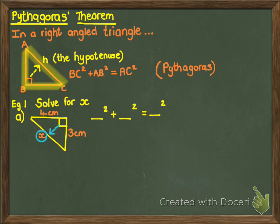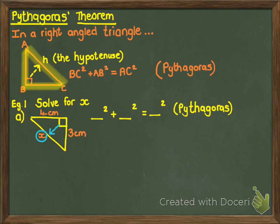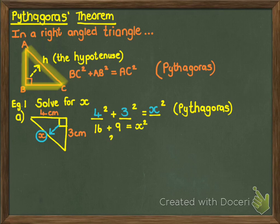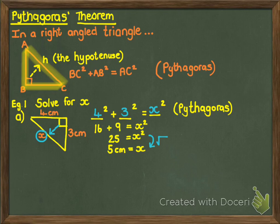I know Pythagoras' Theorem looks like: something squared plus something squared equals something squared — and I write in brackets: Pythagoras. I always put in my hypotenuse first, so the hypotenuse is always on its own. Something squared plus something squared equals the hypotenuse squared. Then I fill in my other two sides and solve the equation. So 4 squared is 16, 3 squared is 9, and 16 plus 9 is 25. Then I square root both sides to find that X is 5 centimeters.